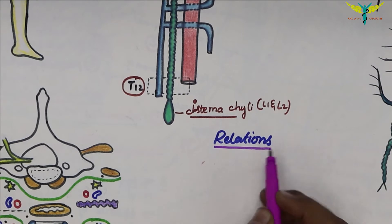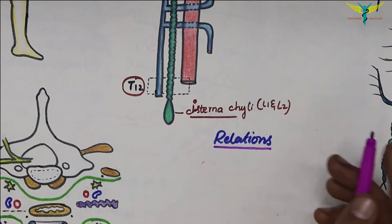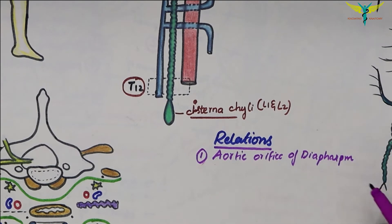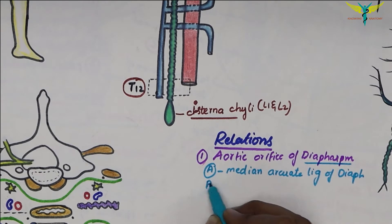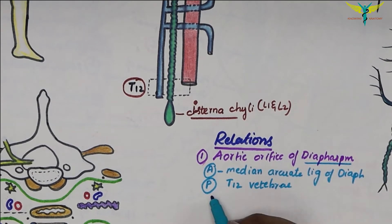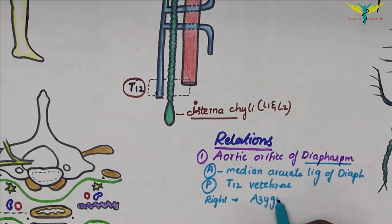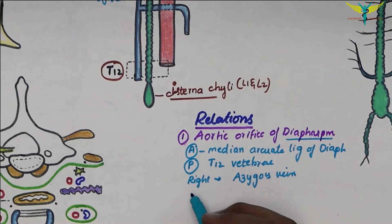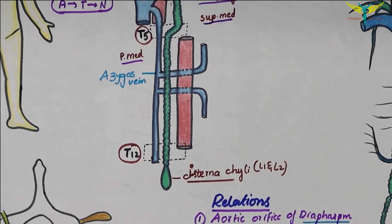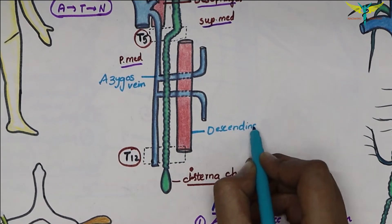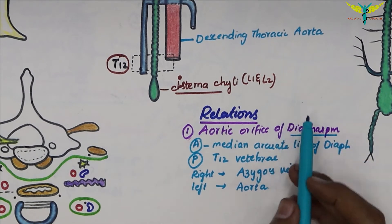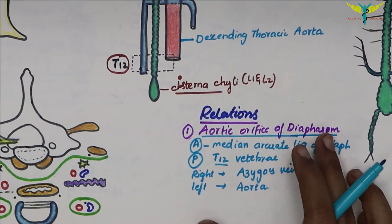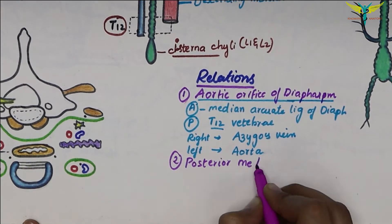Now let's discuss the relations of the thoracic duct. At the aortic orifice of the diaphragm: anteriorly is the median arcuate ligament of the diaphragm; posteriorly is the T12 vertebra; to the right side is the azygous vein; and to the left side is the descending thoracic aorta.